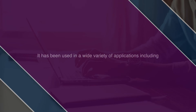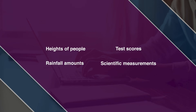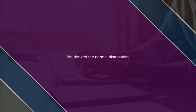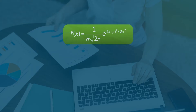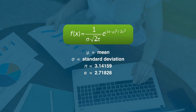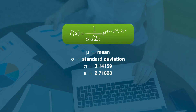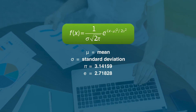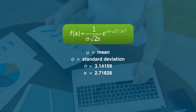If a variable is approximately normal, we can use mathematics to make predictions about the population. The normal probability distribution is the most important distribution for describing a continuous random variable and is widely used in statistical inferences. Applications include heights of people, rainfall amount, test scores, and scientific measurements. Abraham de Moivre, a French mathematician, published the Doctrine of Chances in 1733 and derived the normal distribution. The formula is f(x) = (1 / σ√(2π)) × e^(−(x−μ)² / 2σ²), where μ is the mean, σ is standard deviation, π is 3.14159, and e is 2.71828.